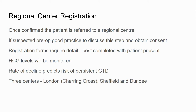Moving on to the regional centre — once the diagnosis is confirmed, the patient is referred on to a regional centre. If it has been suspected pre-operatively on scan, it's good practice to discuss this step and obtain consent from the patient. The registration forms require quite a lot of detail and it's best to complete them with your patient present to make sure you have all the required information. You can let them know that beta-HCG levels will be monitored with both blood and urine tests, and that the rate of decline of beta-HCG predicts the risk of persistent disease. The three centres in the UK are Charing Cross in London, Sheffield, and Dundee.